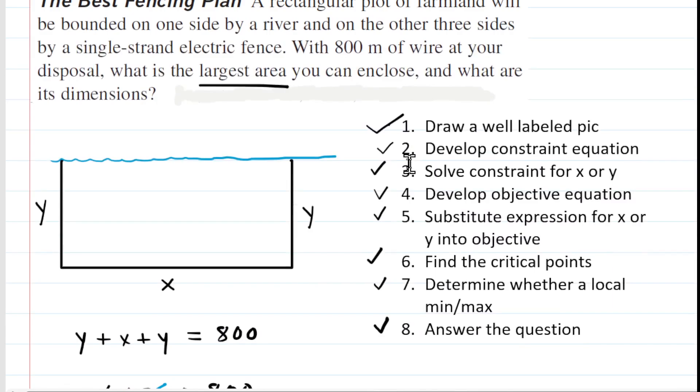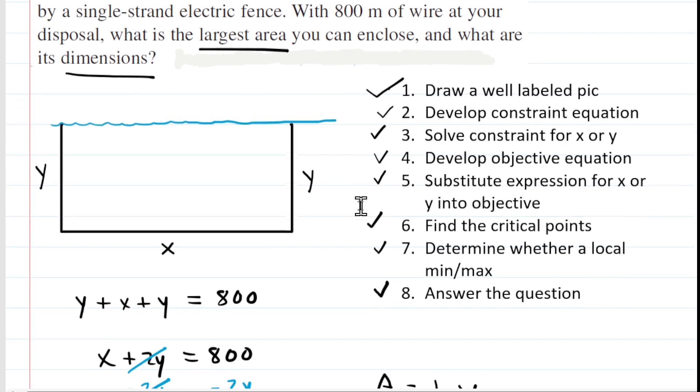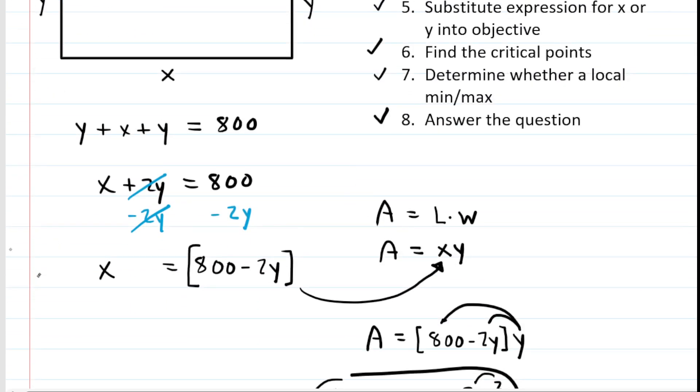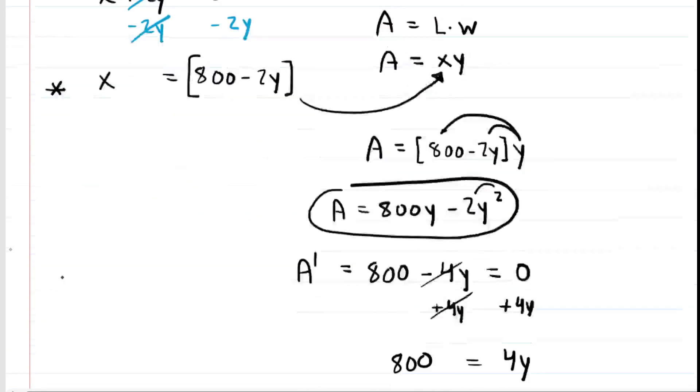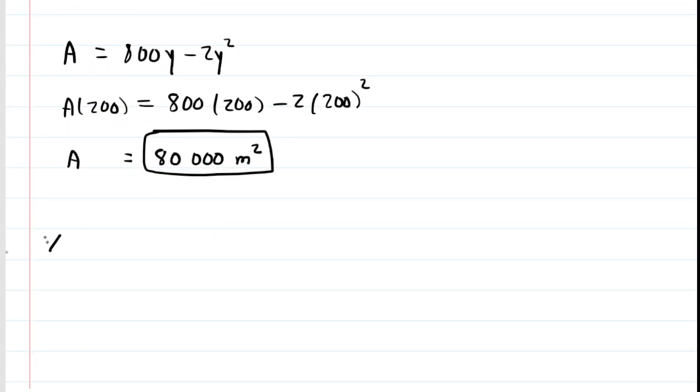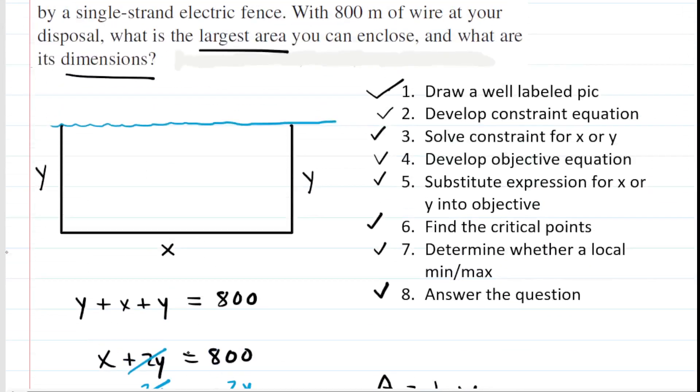The question also asked us to calculate the dimensions. The dimensions just mean the values of x and y. We already have y equals 200. We still need to find x. We can see that x equals 800 minus 2y. We'll write down that equation and plug in the y value. When we do that, we can see that x equals 400 meters. Looking back at the original picture, the x dimension was 400 meters, which is the side parallel to the river. And y was 200 meters, the side perpendicular to the river. These are the correct answers for the dimensions.